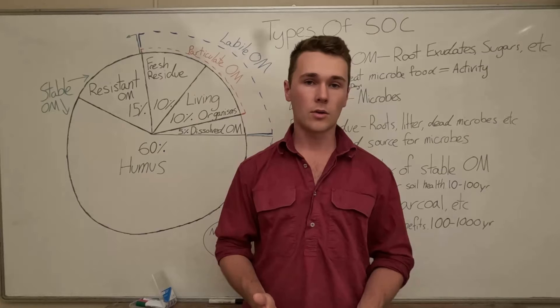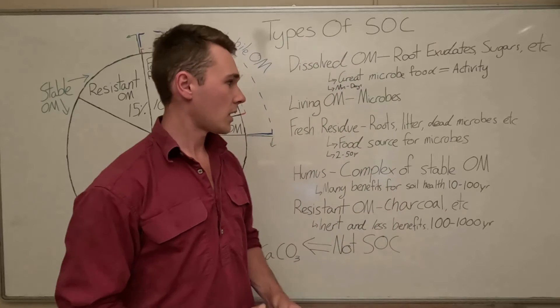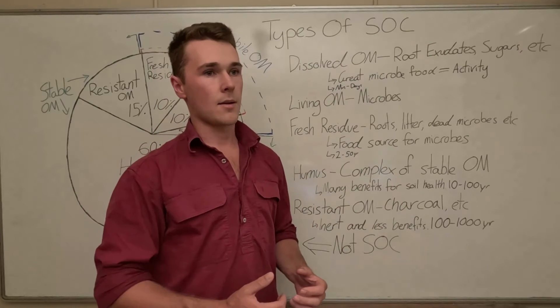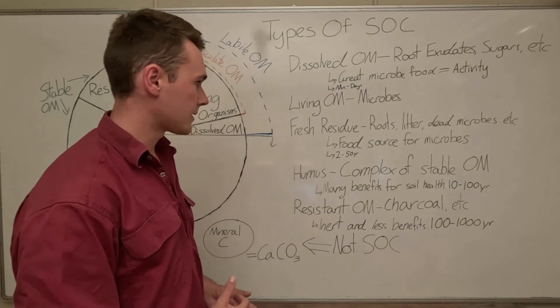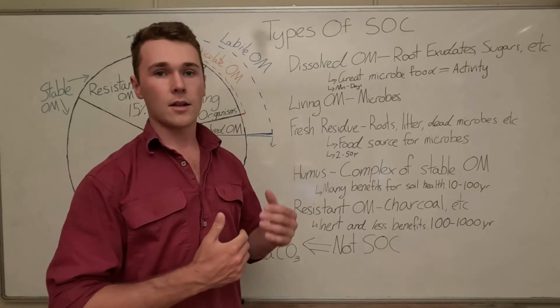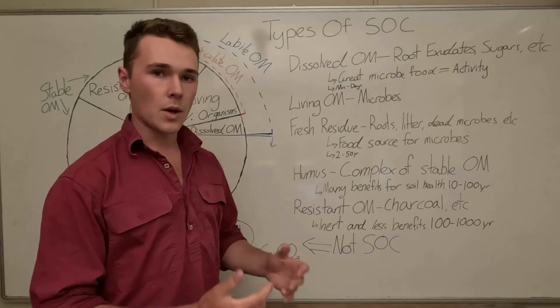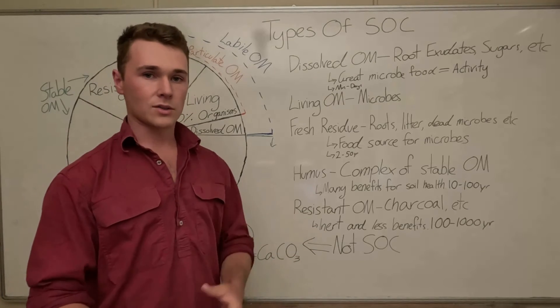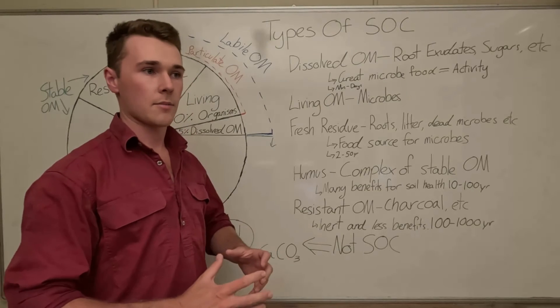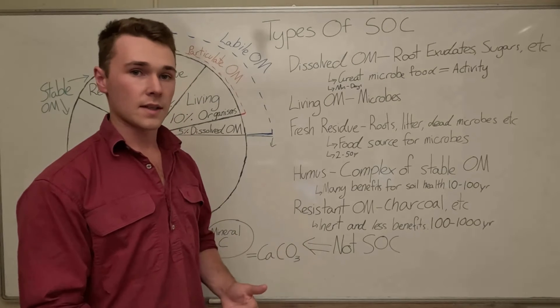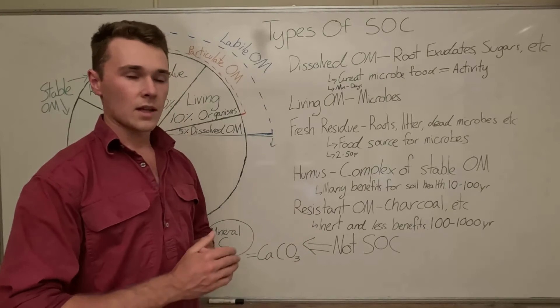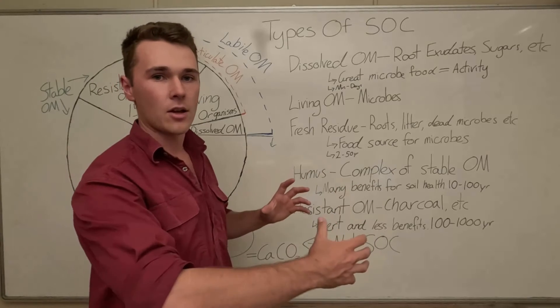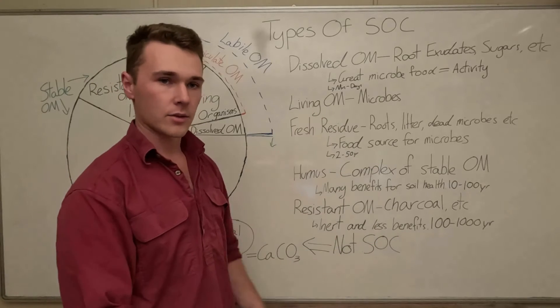So if you're familiar with Dr Christine Jones's work she explains the humification process as done by mycorrhizal fungi when they eat root exudates and so what happens is root exudates are produced by a plant, mycorrhizal fungi and some other fungi effectively eat or process these root exudates into a very complex chain of carbon in our soil.